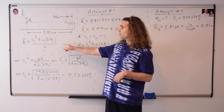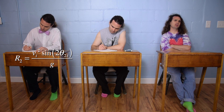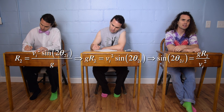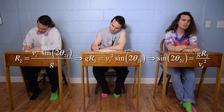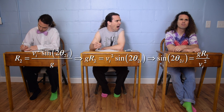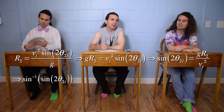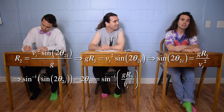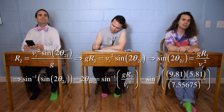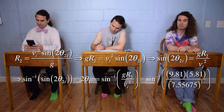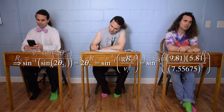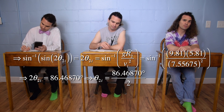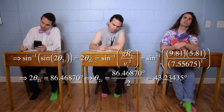Bo, could you please solve the range equation for the launch angle? The first step is the same — we multiply the whole equation by little g, but then we need to divide both sides by the initial speed squared, and we get the sine of 2 times the second launch angle equals little g times the second range, all divided by the initial speed squared. And taking the inverse sine gives us... does it give us 2 theta or just theta? Remember, on the left-hand side it is the inverse sine of the sine of 2 times the second launch angle, which is just 2 times the second launch angle. With numbers, we get 2 times the second launch angle equals the inverse sine of positive 9.81 times 5.81, divided by 7.55675 squared, which works out to be 86.46870 degrees. So we divide that by 2, giving the second launch angle as 43.23435 degrees.